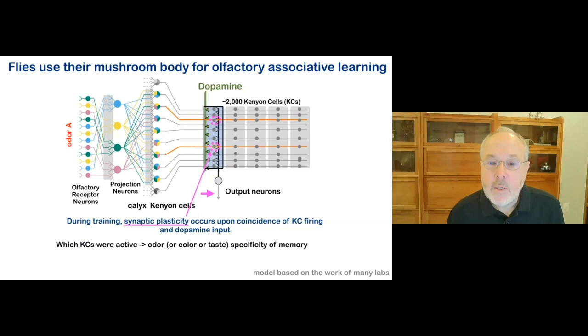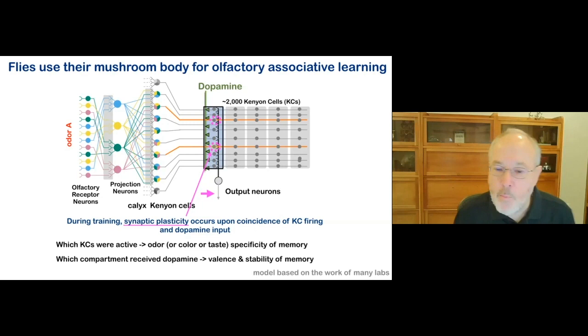Which Kenyon cells were active determines the identity of the stimulus, identity of the odor. Which compartment received the dopamine input determines the valence, whether it's positive or negative, of the stimulus of the memory and the stability of the memory.